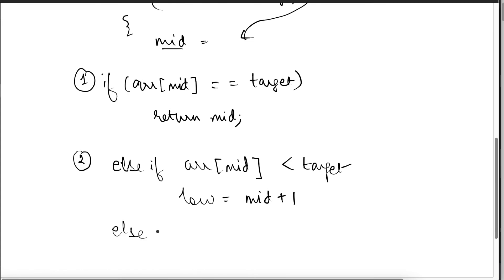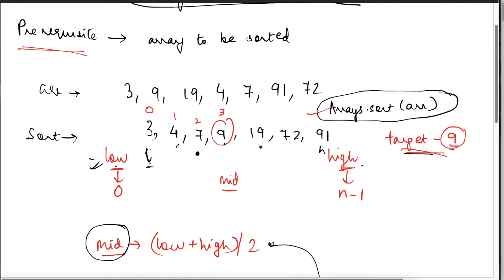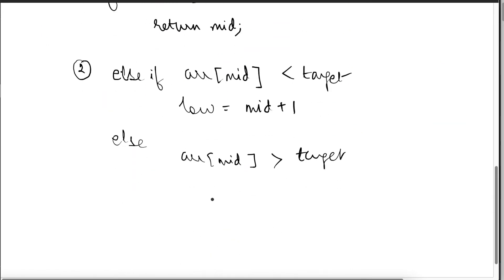And the other part is else, what will be the other condition if it is not equal, if it is not less, it should be greater than. So if the array of mid, if it is greater than the target. So in this case, let's say we are at 19. We need to find out 9 and we are at 19. Is there any point in searching beyond 19? Because if 19 itself is greater than 9, 70 to 91 or anything after 19 will be because it is sorted. So now I have to reduce my problem space and try to move towards the beginning. So that is why I have to make sure that the high pointer comes before mid. So the high will be now equal to mid minus 1.